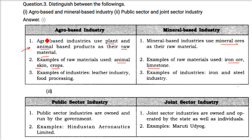Examples of agro-based industries include the leather industry and food processing industry. Examples of mineral-based industries include the iron and steel industry.